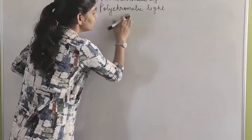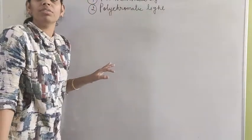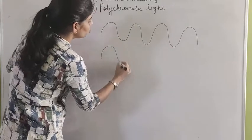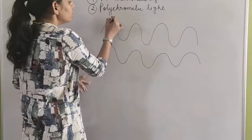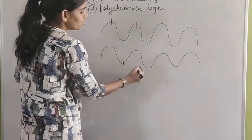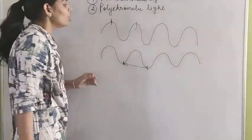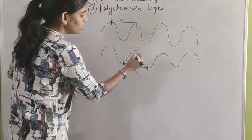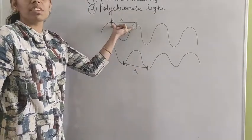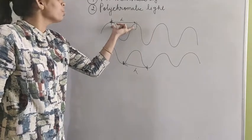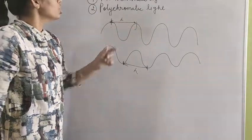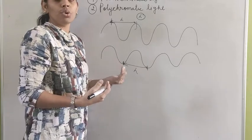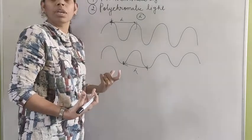We were also discussing wavelength. The distance between crest and crest, or between trough and trough, is known as wavelength, and we denote it by the letter lambda. Each colour has its own wavelength — red colour has its own wavelength, white colour has its own wavelength.